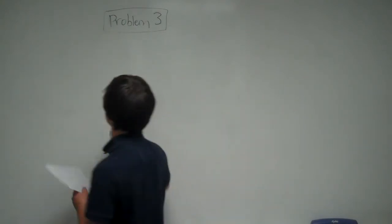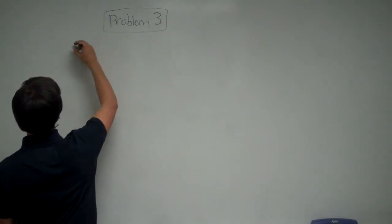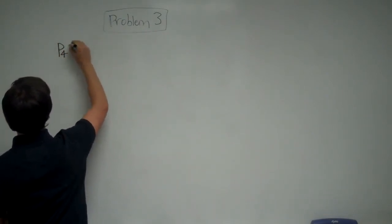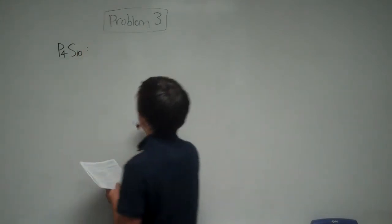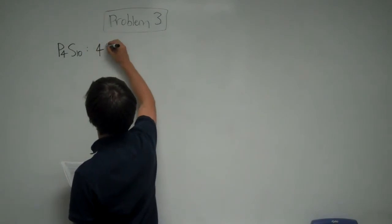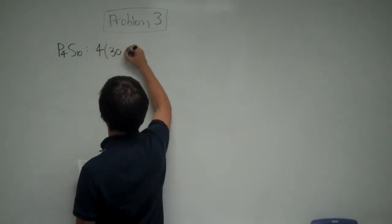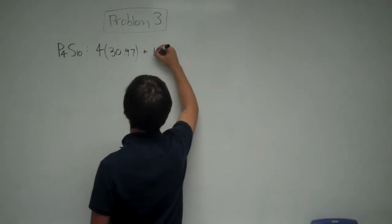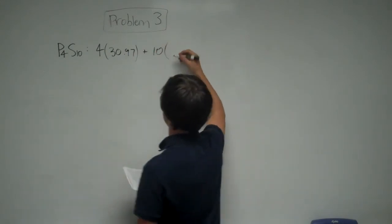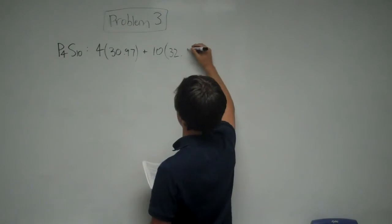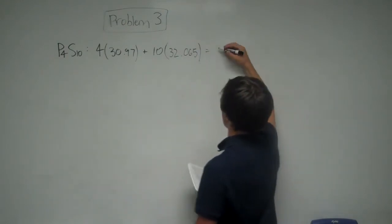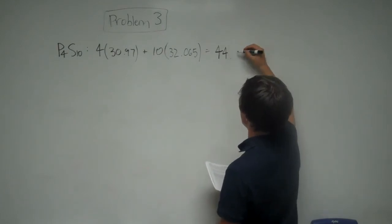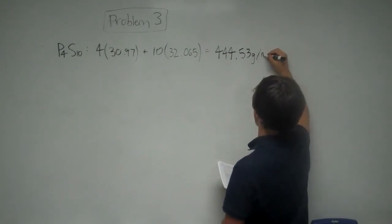So for this question, the first thing we're going to want to do is find the molecular weight of P4S10. For that, we're going to use your periodic table, and you'll find 4 times 30.97 plus 10 times 32.065 will give you a total molecular weight of 444.53 grams per mole.